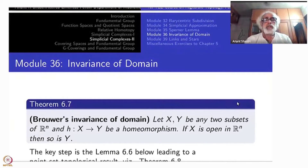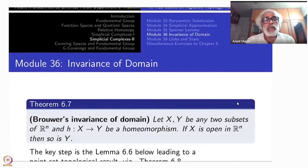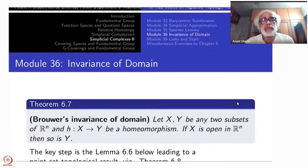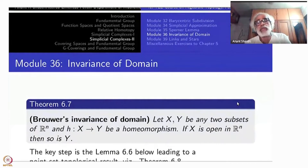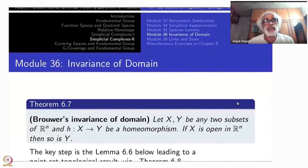Today's topic is the Big Theorem: Brouwer's Invariance of Domain. We have already seen last time a weaker version of this theorem, namely for N not equal to M, Euclidean space Rⁿ is not homeomorphic to Rᵐ. This will be a consequence of the Big Theorem that we are going to prove today: if X and Y are two subsets of Rⁿ homeomorphic to each other, and one of them is open, then the other one is also open.